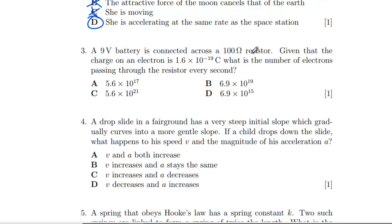Question three: a 9V battery is connected across a 100Ω resistor. Given that the charge on an electron is that, what is the number of electrons passing through the resistor every second? We've got V equals IR, so I is V over R, which is 9 over 100. That is coulombs per second. We want electrons per second, so we need to divide by the coulombs.